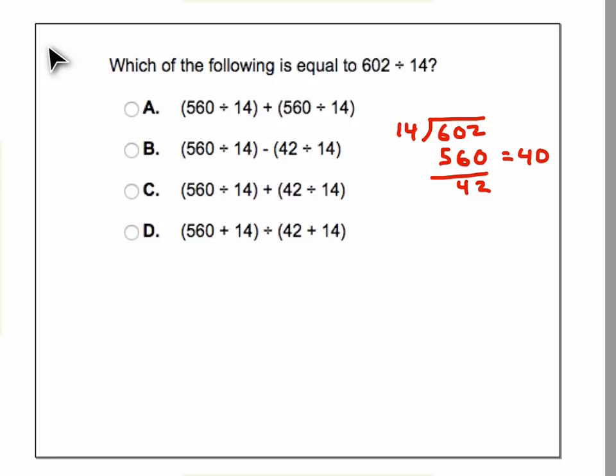Then, what is 42 divided by 14? Well, if I would take 3 times 14, I would get exactly 42. Subtract that, I get 0 left over.